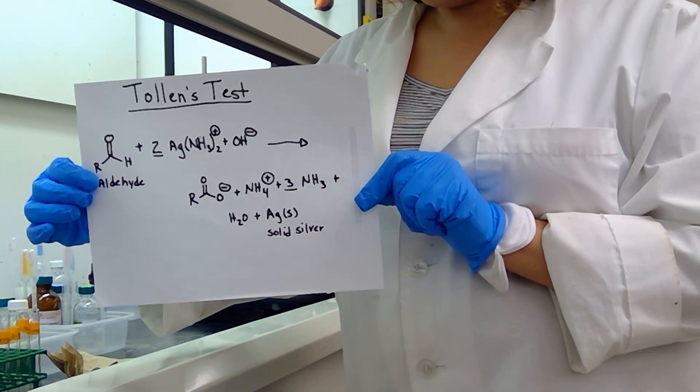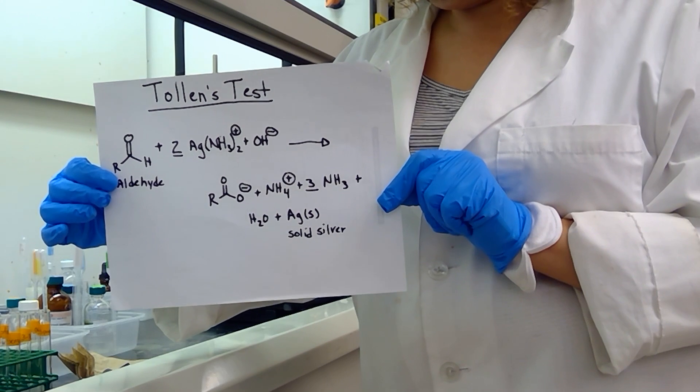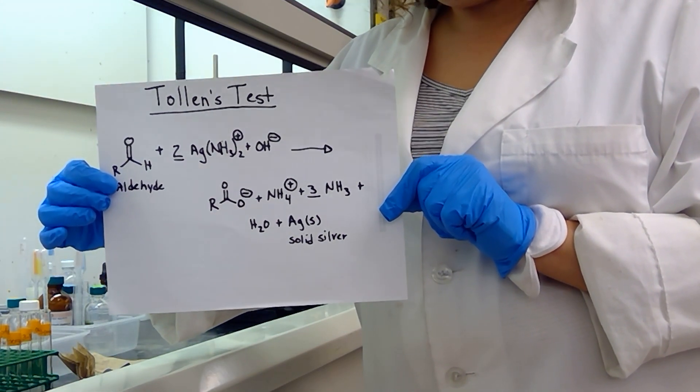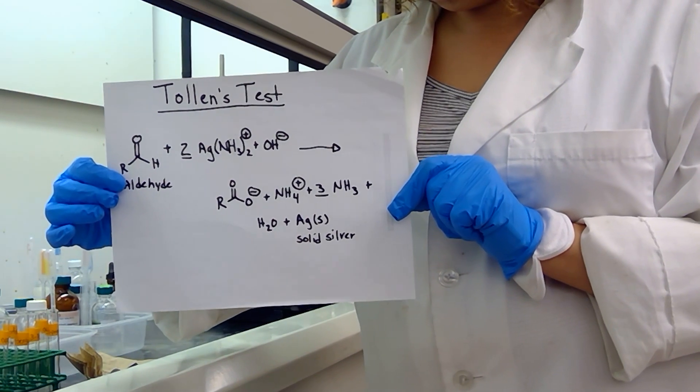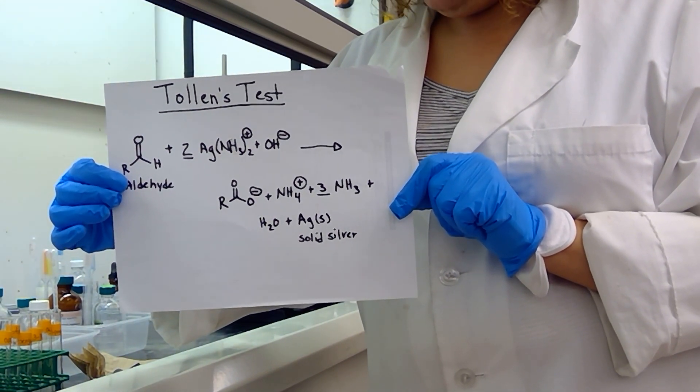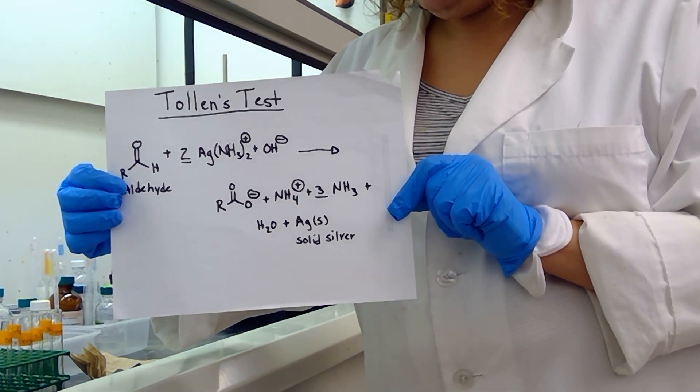Next up we have the Tollens test in experiment 20, and this is a test for aldehydes. Only aldehydes can react with this experiment. So we will test to see if we get a silver precipitate at the end.